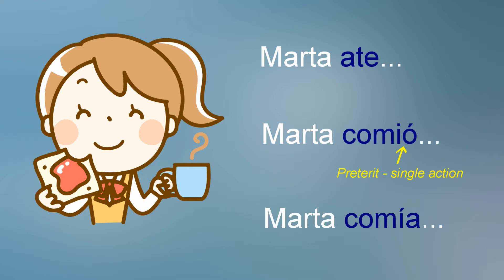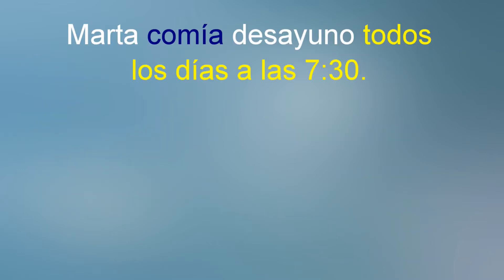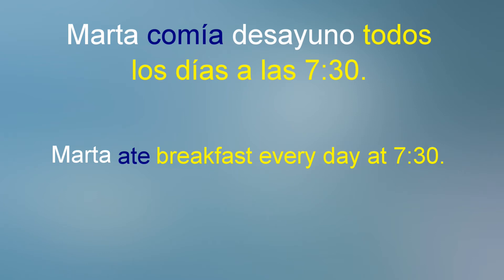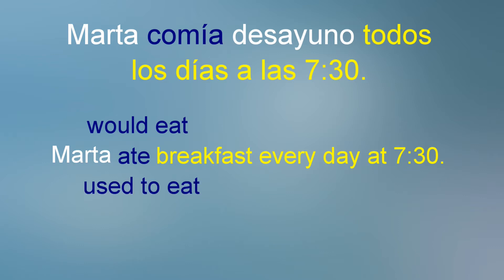Even though the English sentence is identical — 'Marta ate' — the thought that generated each sentence is unique, and therefore Spanish uses either preterite or imperfect to express that hidden meaning. Note also that one could translate the Spanish verb comía in several different ways: Marta comía desayuno todos los días a las siete y media translates as 'Marta ate breakfast every day at 7:30,' 'Marta would eat breakfast every day at 7:30,' or 'Marta used to eat breakfast every day at 7:30.' It would be unnecessary in Spanish to translate words like 'would' or 'used to' because the verb itself expresses the repeated or ongoing action.